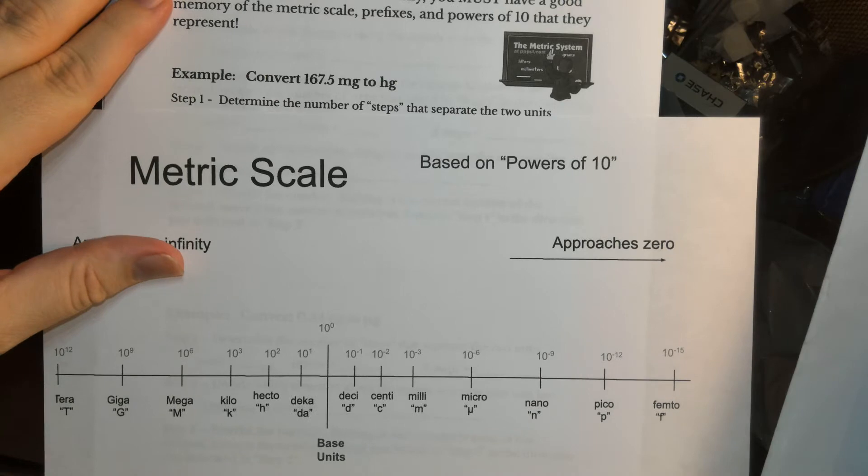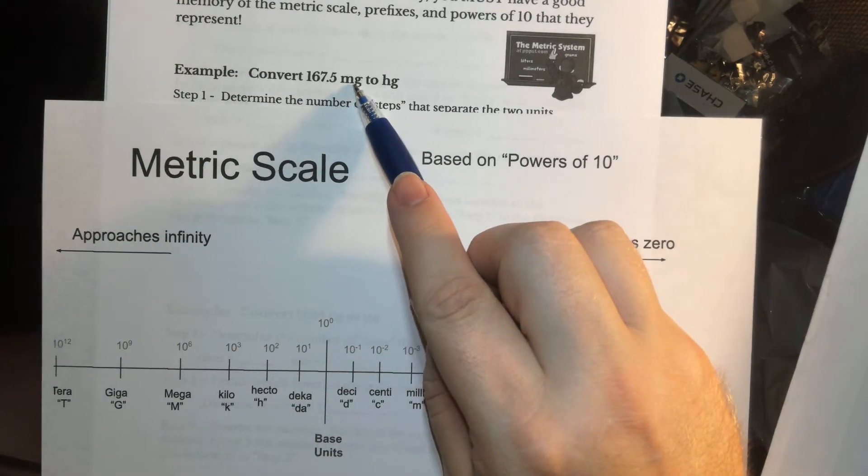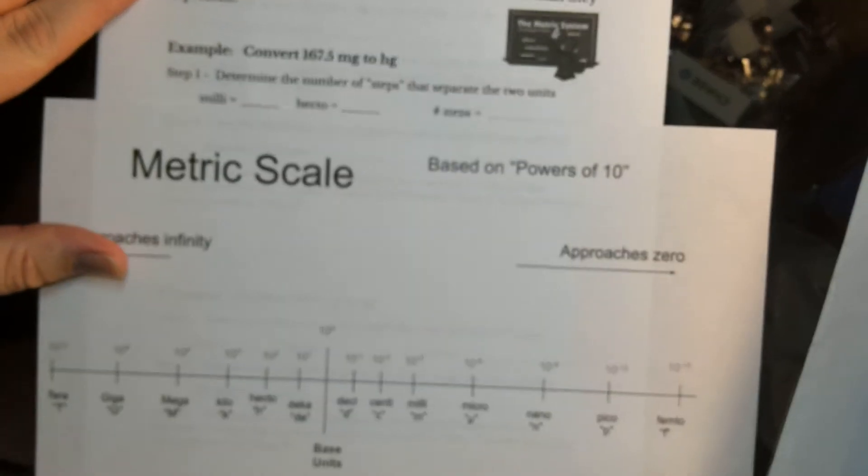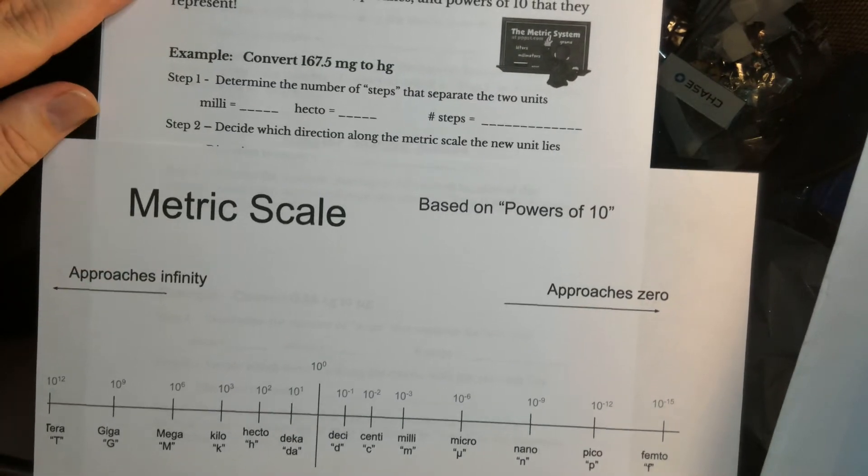In the very first example, we're going to convert 167.5 milligrams into hectograms. I have a little algorithm for doing this. This method is called moving the decimal, and we're literally going to do that.